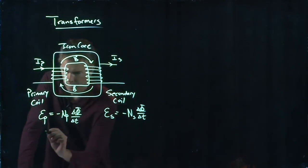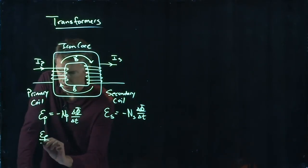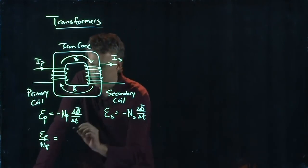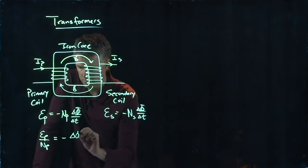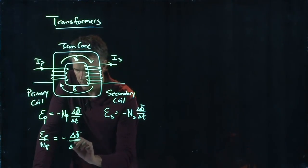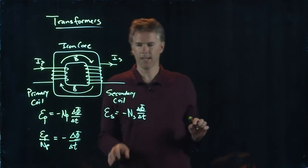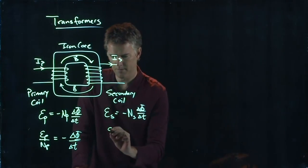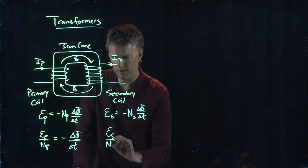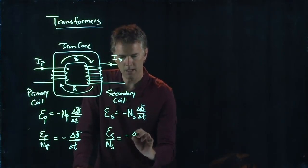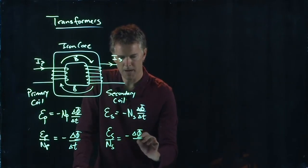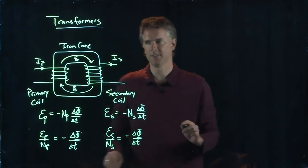I can divide by N sub P and I get epsilon P over N sub P equals minus delta phi over delta T. And I can do the same over here. Epsilon S over N sub S equals minus delta phi over delta T.